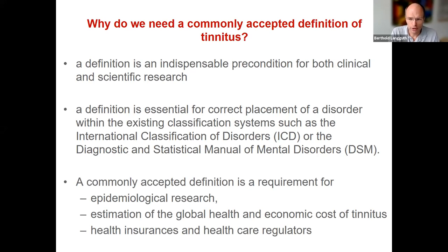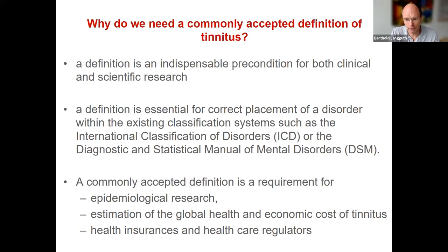If you want to do epidemiological research — if you want to learn more about risk factors for tinnitus, what causes tinnitus, what is the course of tinnitus over time — we need a commonly accepted definition. Because at the moment, if you look into the literature about prevalence rates of tinnitus, there's a large variety in the different studies, and probably the most important factor for this variability is that different researchers use somewhat different definitions of tinnitus. These classifications are also important for discussions with health insurances and healthcare regulators concerning reimbursement and treatment systems for tinnitus.